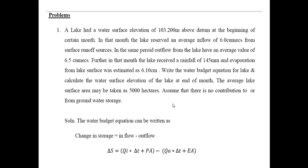Problem 1: A lake had a water surface elevation of 103.200 meters above the datum at the beginning of a certain month. In that month, the lake received an average inflow of 6 cubic meters per second from surface runoff sources. Outflow from the lake had an average value of 6.5 cubic meters per second. The lake received 145 mm of rainfall, and evaporation from the lake surface was estimated as 6.10 cm. Write the water budget equation for the lake and calculate the water surface elevation at the end of the month. The average lake surface area may be taken as 5,000 hectares. Assume there is no contribution to or from groundwater storage.